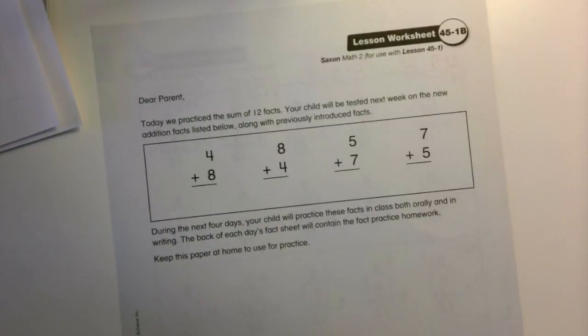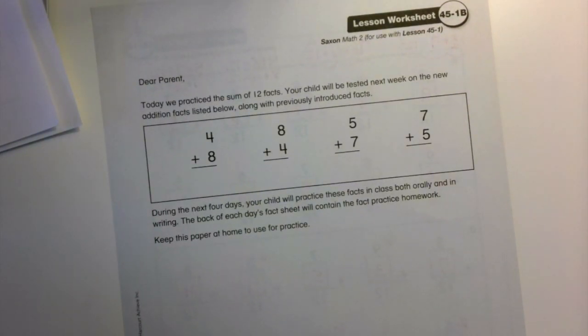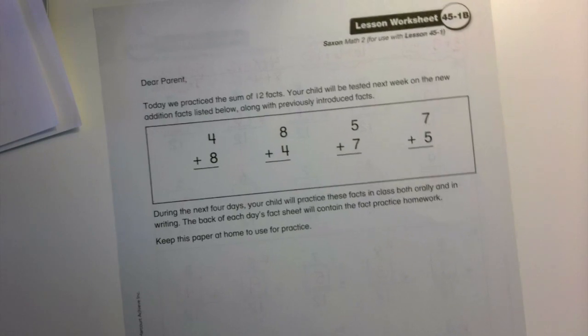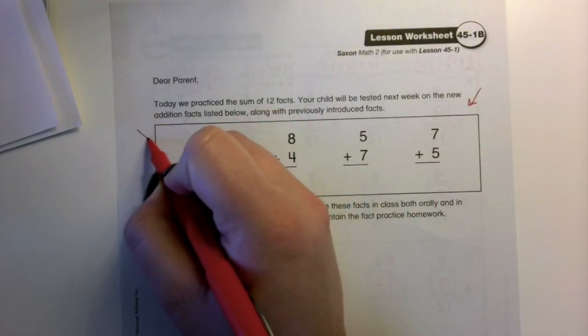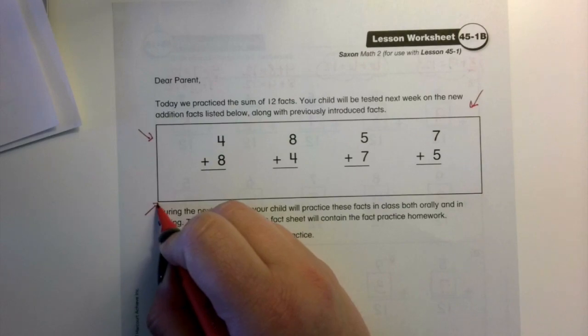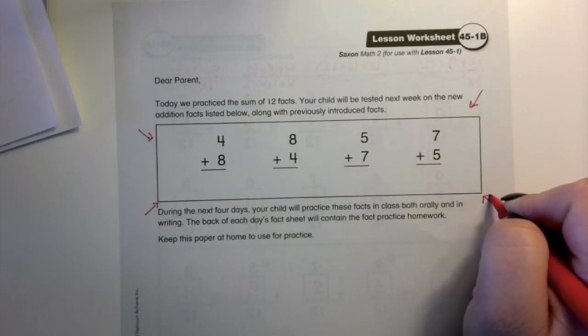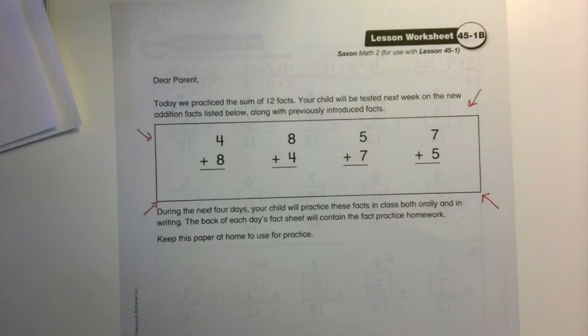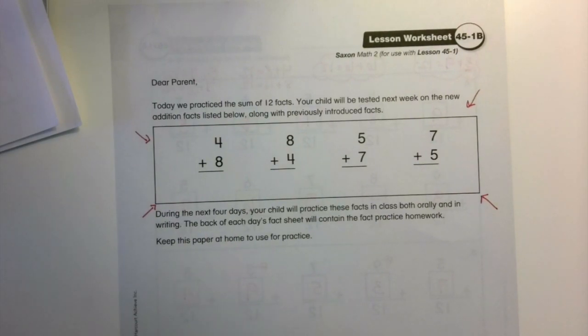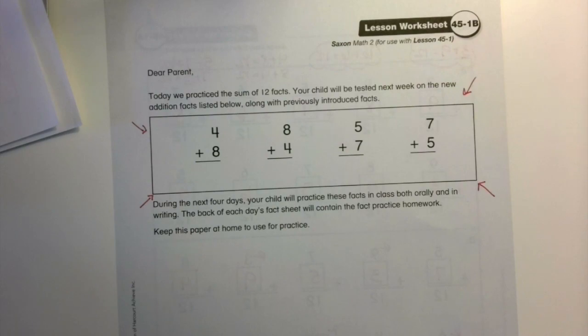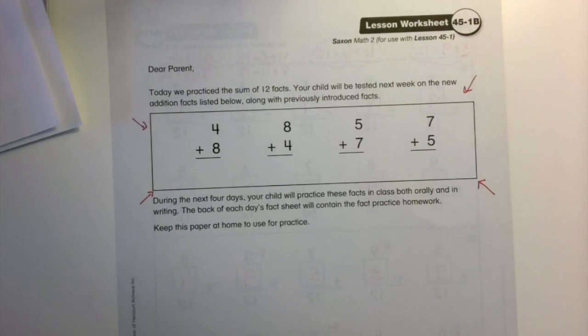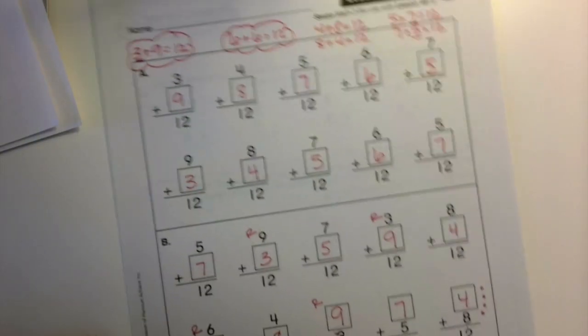Okay. On the back side of this paper is a letter for your parents about our fact practice. Okay. So these are your four new facts that you should continue to practice. And in your folder for next week, you will have fact cards with these new facts on them, in them. So you can be looking for those. Okay. These new facts will be coming at you the next couple of days with our math facts. So this paper you can keep at home to use for practice. You do not have to return this one back to me.